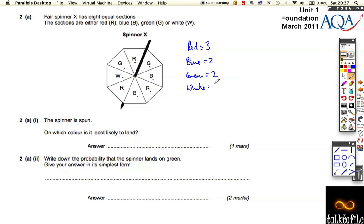and then there's 1 white. And let's just check we've got them all. 3, 5, 6, 7, 8. Which colour is it least likely to land? White. One mark, easy. Because there's only one section and they're all the same size.